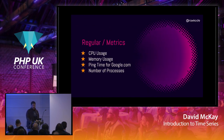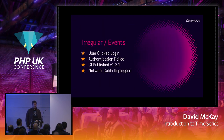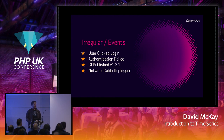Examples of regular metrics: CPU usage, memory usage, ping time or latency to an external service every 10 seconds, number of processes running on a machine. Irregular time series — events — are things you cannot predict: when is the next login event going to happen? When will a user get their password wrong? When will the CI finish? When will someone trip over a network cable? These are all important and should be stored, but you can never predict them, and the way we handle these two types of time series data has to be different.